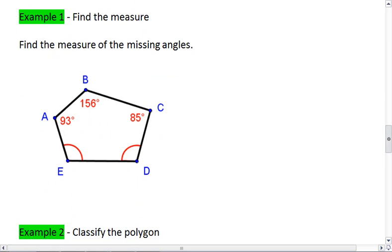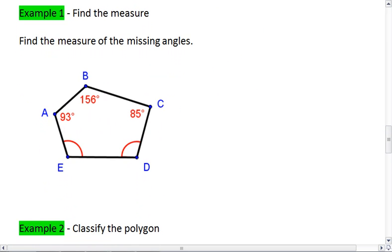Here's your first example. Find the measure of the missing angles. Note, these arcs do mean that angle E and angle D are congruent. Try this on your own first, and resume the video when you're ready to check the solution.